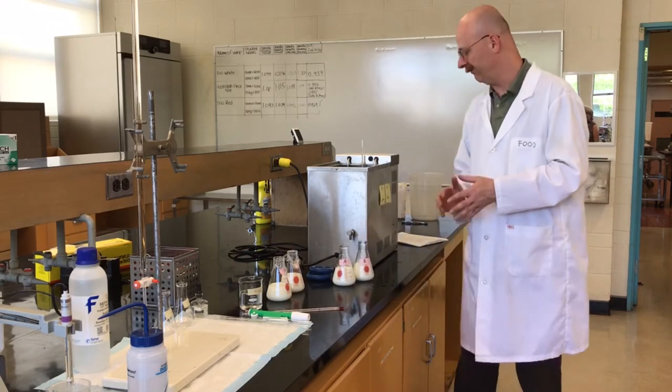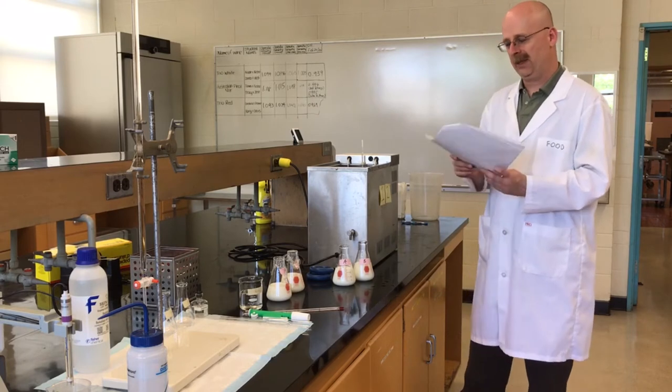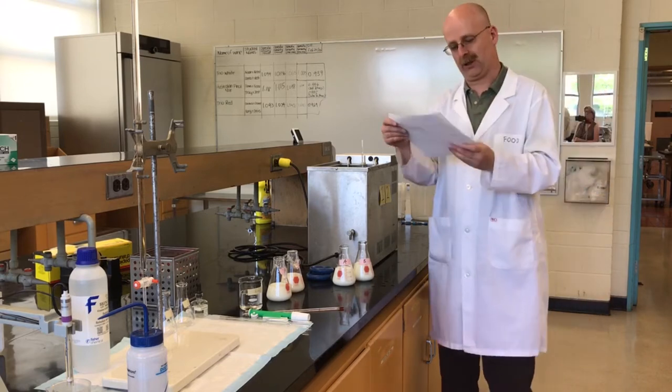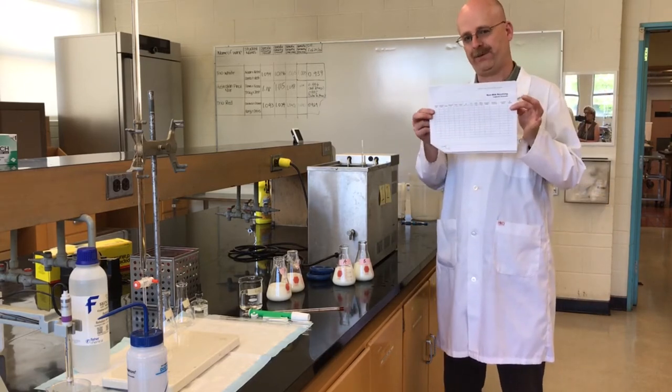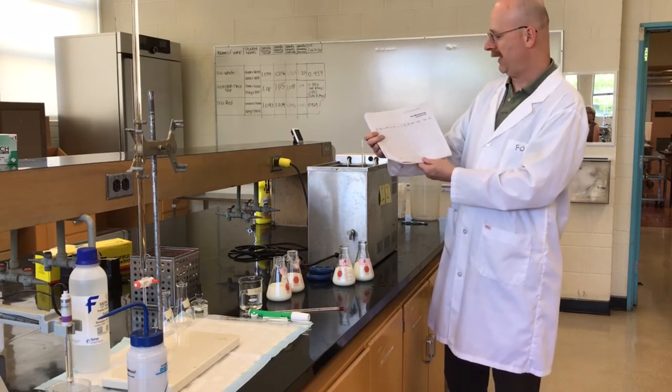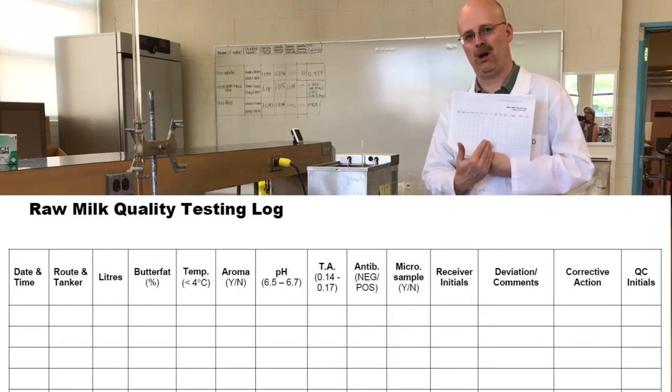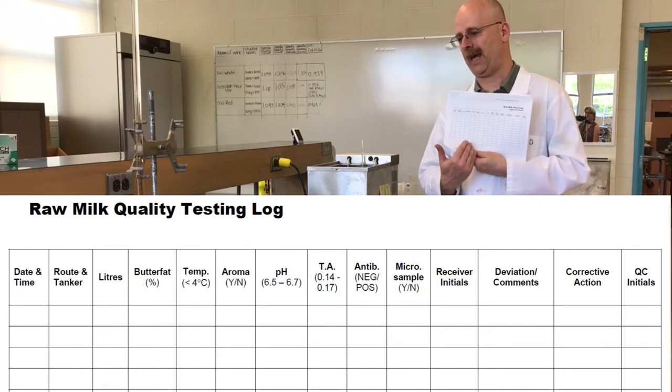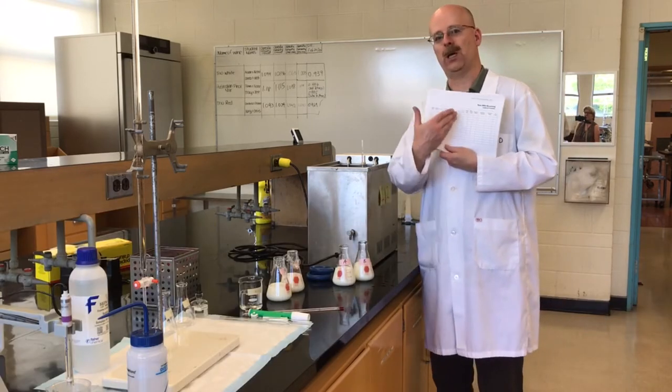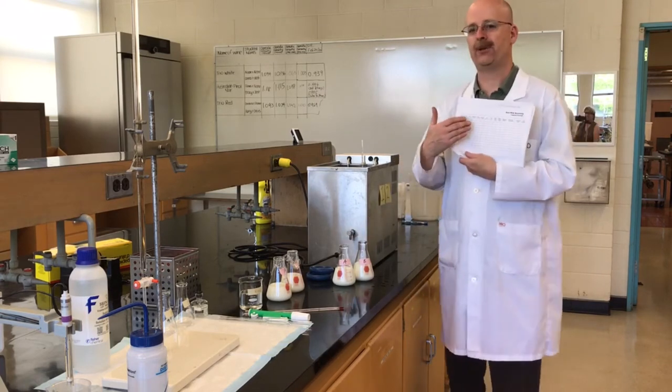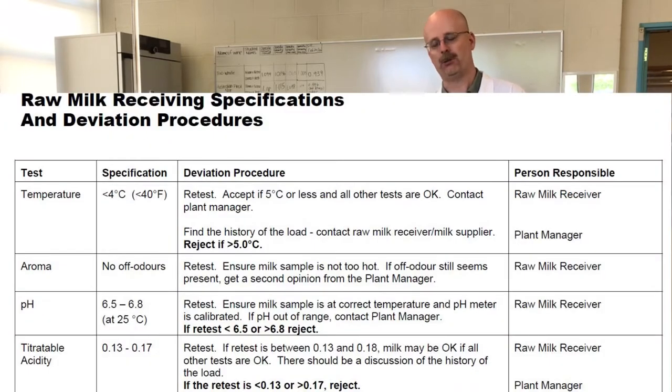You'll notice in your handouts we have a logbook, so this is on page 5-12. It's entitled Raw Milk Receiving Logbook, and we can be filling in this information as we go along. So we have two samples, sample A and sample B. If we detect any aroma difference, we could be logging this. We could be logging the temperature of these samples. You'll notice that there's also deviation procedures. So there are specifications, for instance, the requirement for the temperature to be less than 40 degrees celsius.